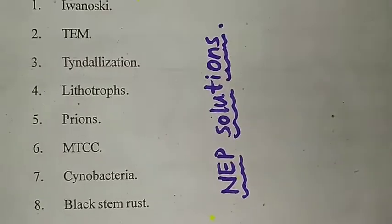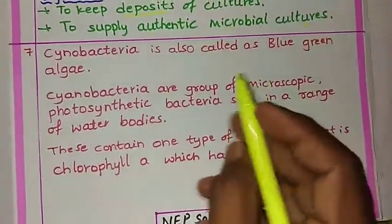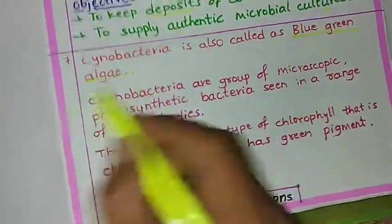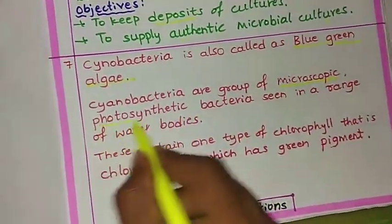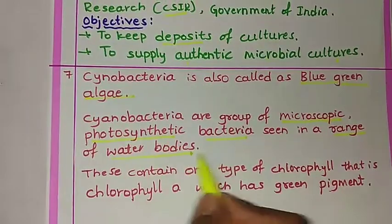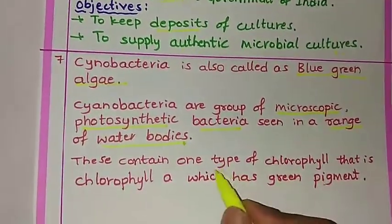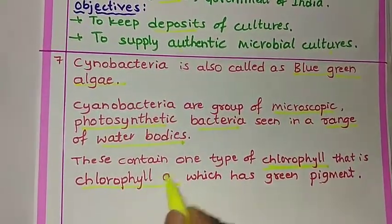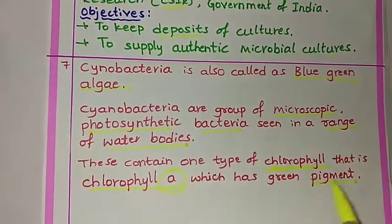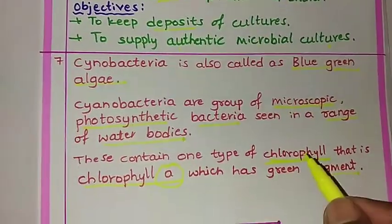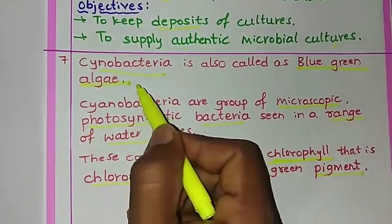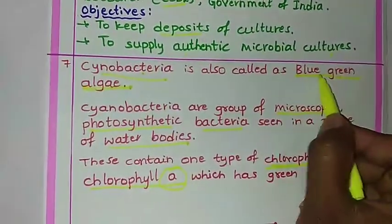The seventh question is about cyanobacteria, which is also called blue-green algae. Cyanobacteria are a group of microscopic photosynthetic bacteria found in a range of water bodies. They contain one main type of chlorophyll, that is chlorophyll a, which gives the green pigment. Note that questions may be asked about either cyanobacteria or blue-green algae.